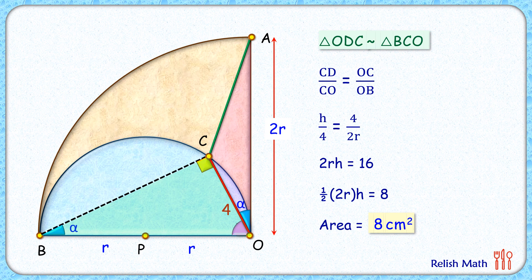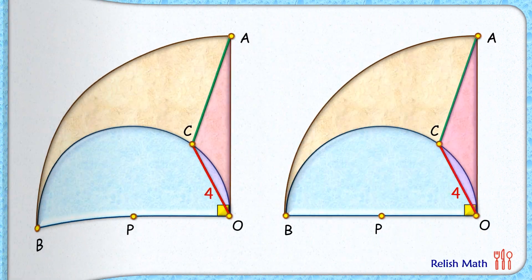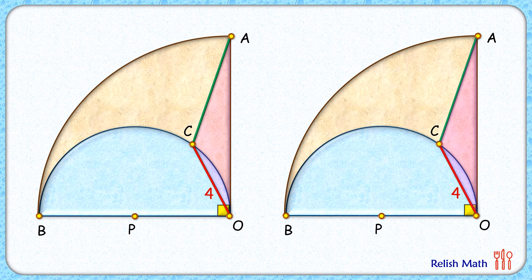Now let's check the third approach — the logical approach. The only information given related to point C is that it lies on the circumference of this semicircle. If we shift point C slightly to the right or left, provided we keep the CO length as 4 centimeters, our answer should not change.